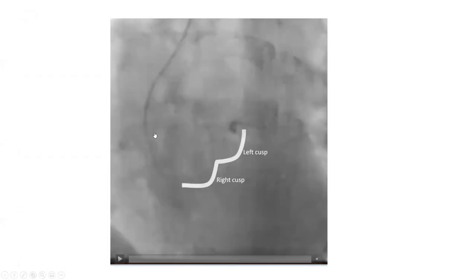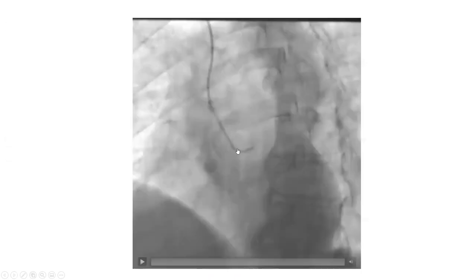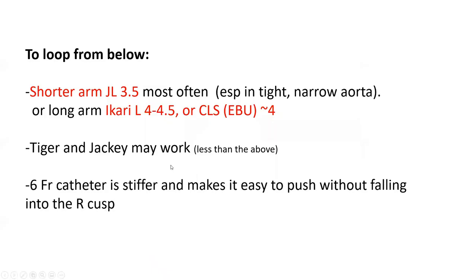Tiger and Jackie may work for looping from below, as shown in one case with a Jackie catheter, but it's less often successful. It works better with six French catheters because they are stiffer and provide more pushability without tending to prolapse from left to right cusp as you push. Six French gives more stability.